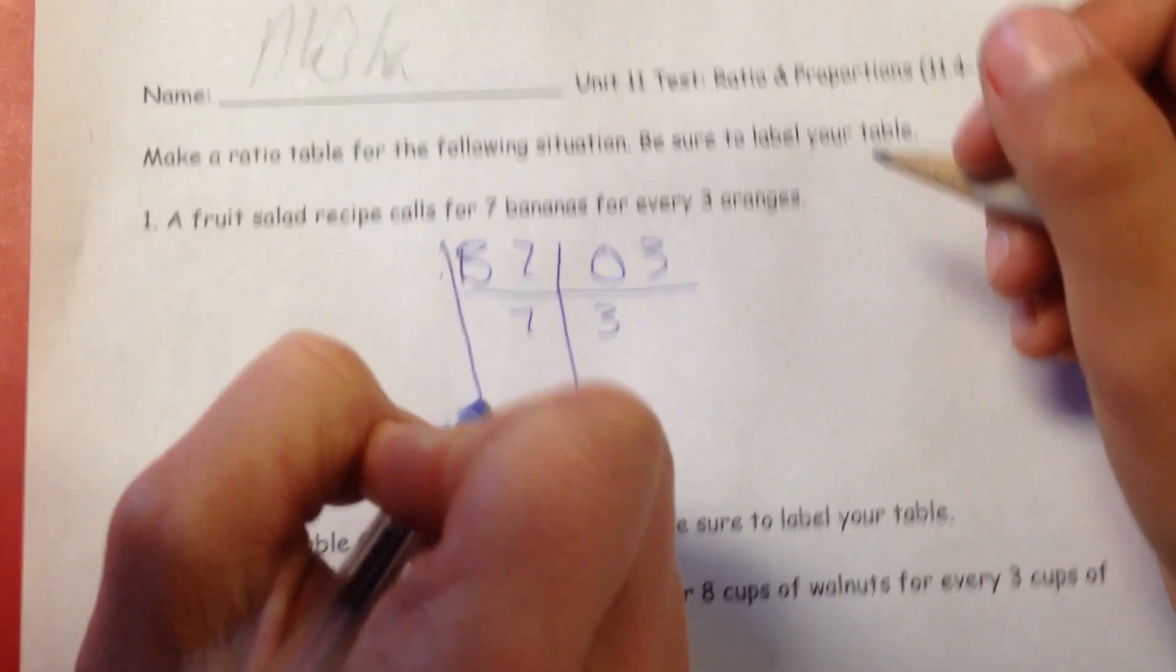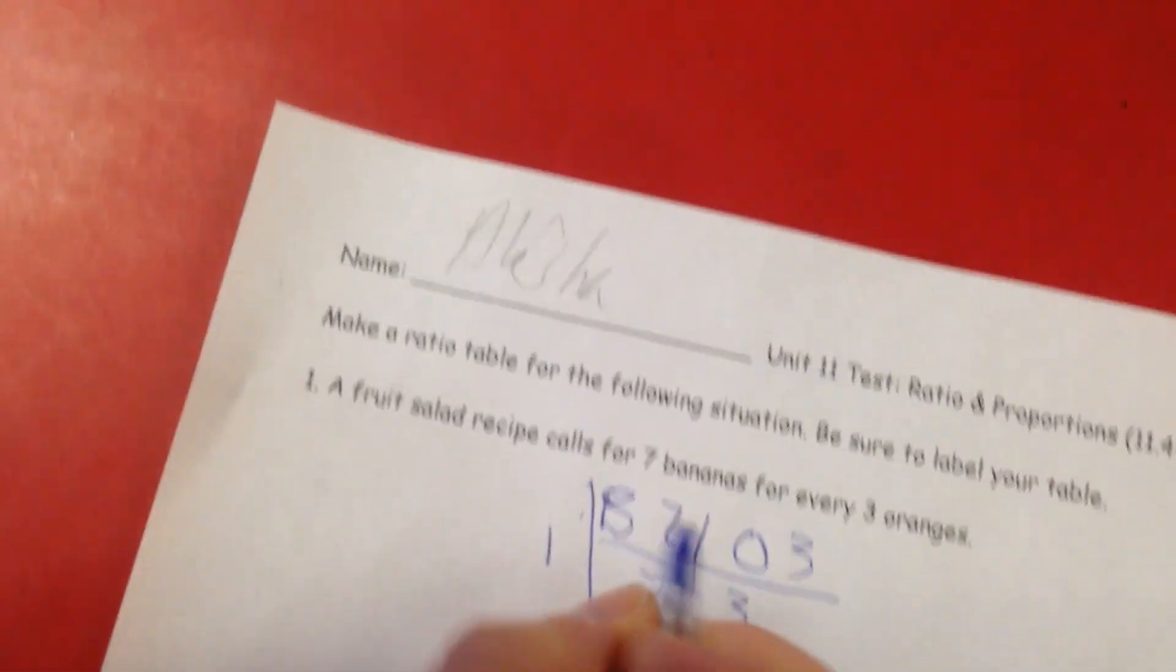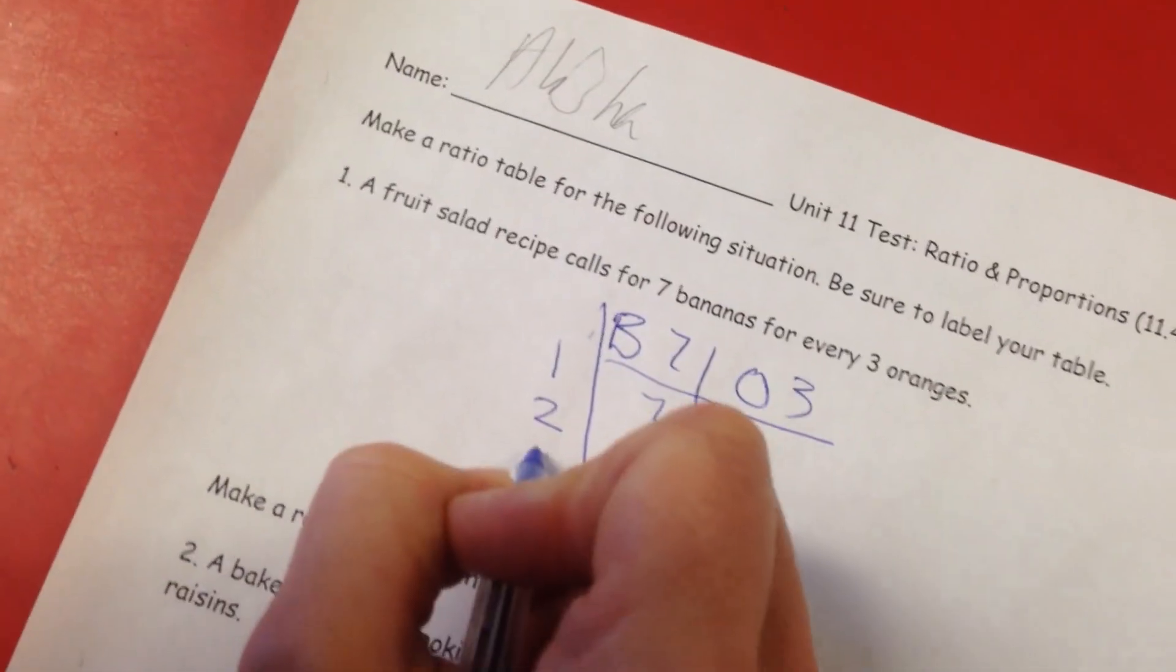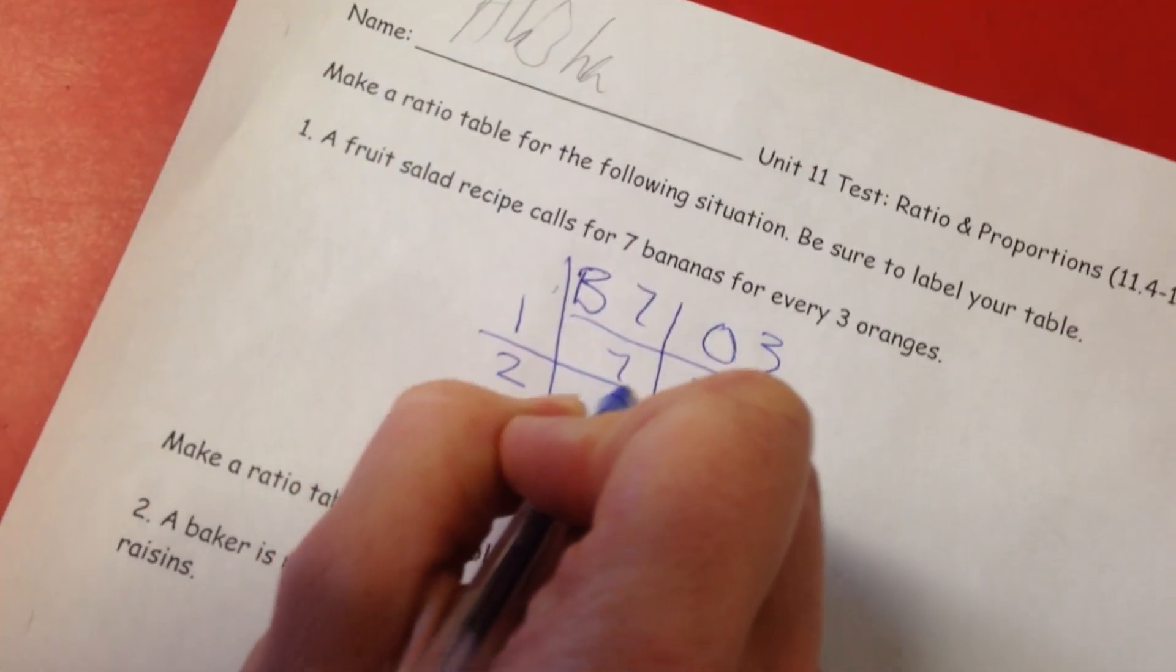We could even tally, make another table and have one there, two here, three here to see how many groups it would be for those.